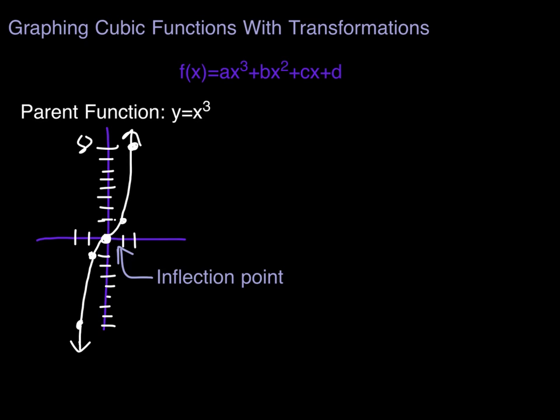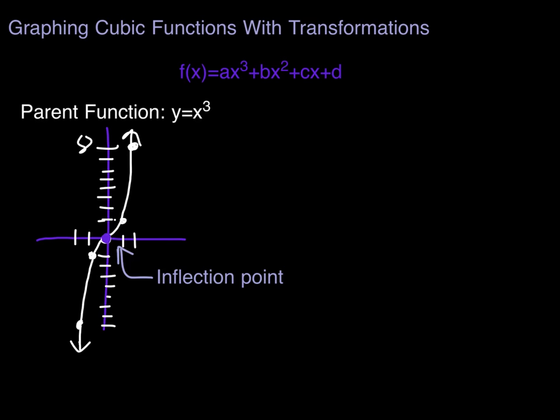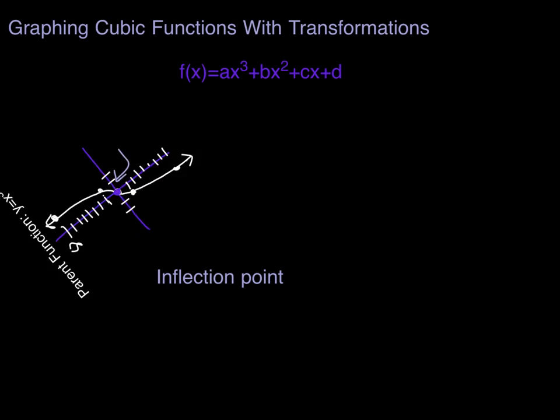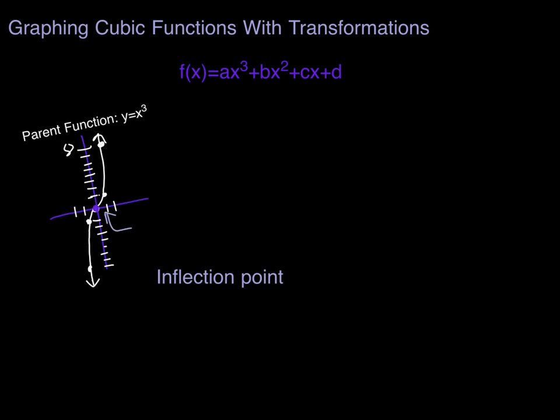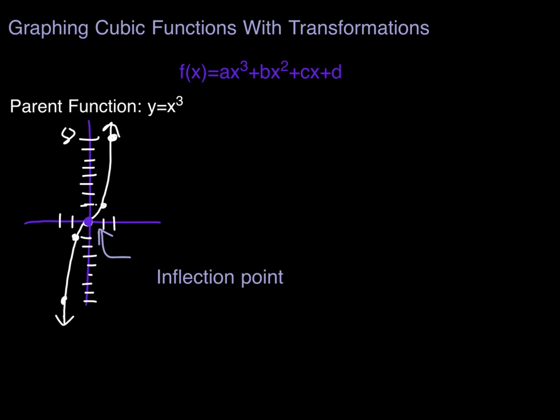Now the cubic function, the parent function, is what we call an odd function. And that's because it has symmetry about the origin. Rotational symmetry. If I were to spin that around 180 degrees, it would look exactly the same. So if I did this, it looks the same. 180 degrees rotated. And once again, that's called an odd function.